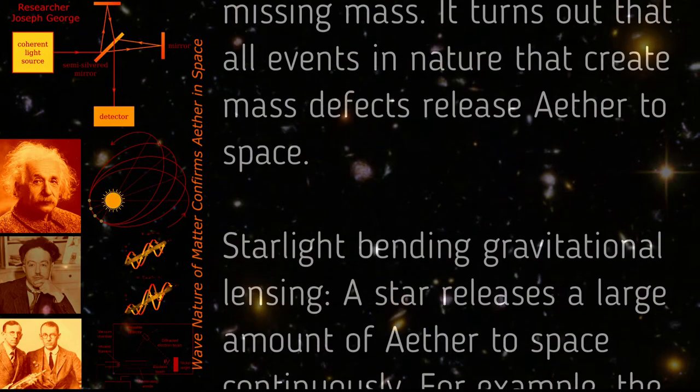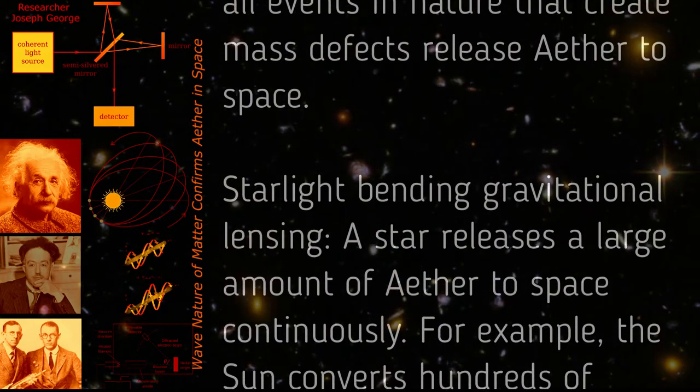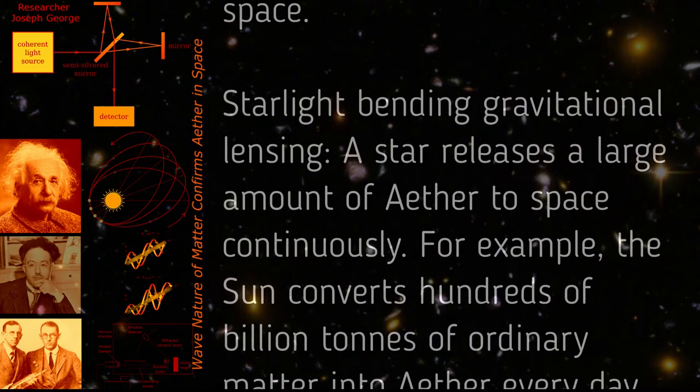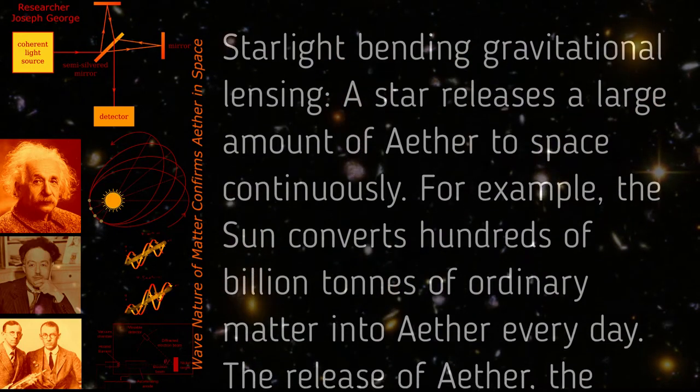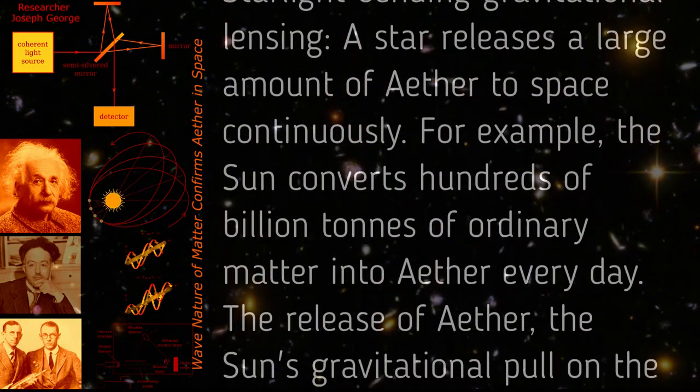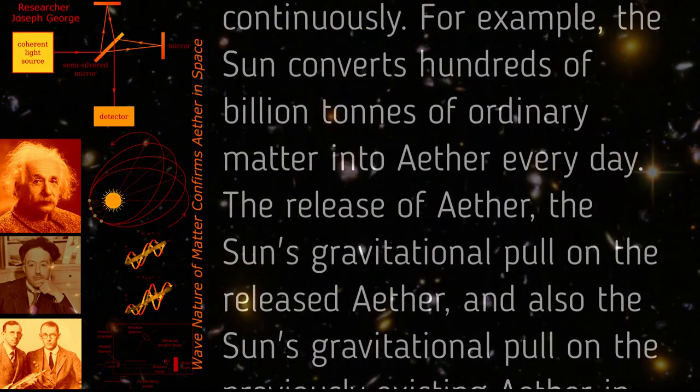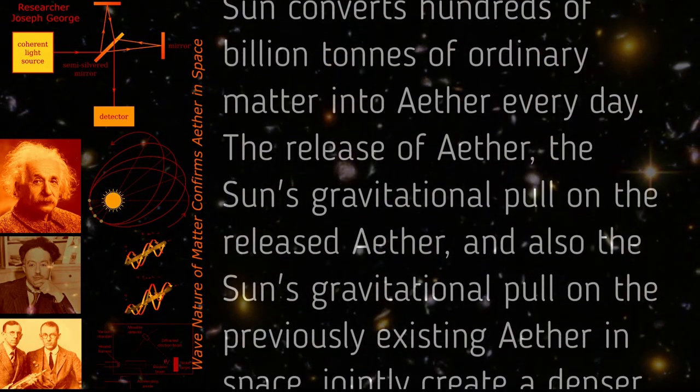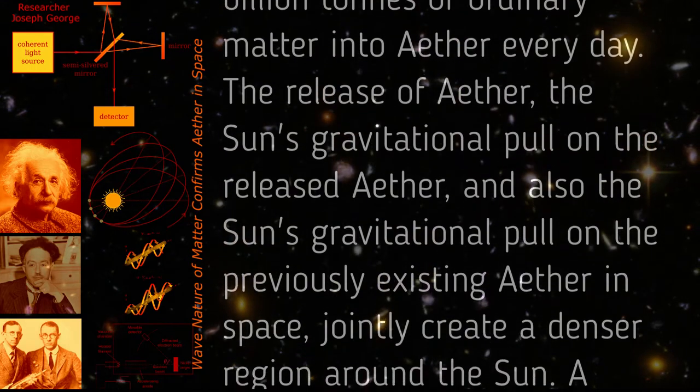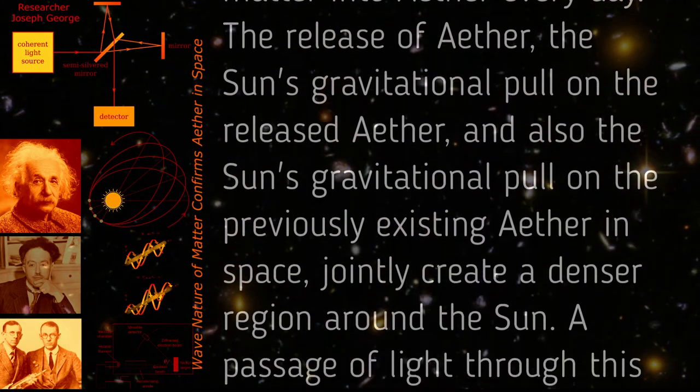Starlight bending and gravitational lensing: A star releases a large amount of ether to space continuously. For example, the sun converts hundreds of billions of tons of ordinary matter into ether every day. The release of ether, the sun's gravitational pull on the released ether, and also the sun's gravitational pull on the previously existing ether in space jointly create a denser region around the sun.